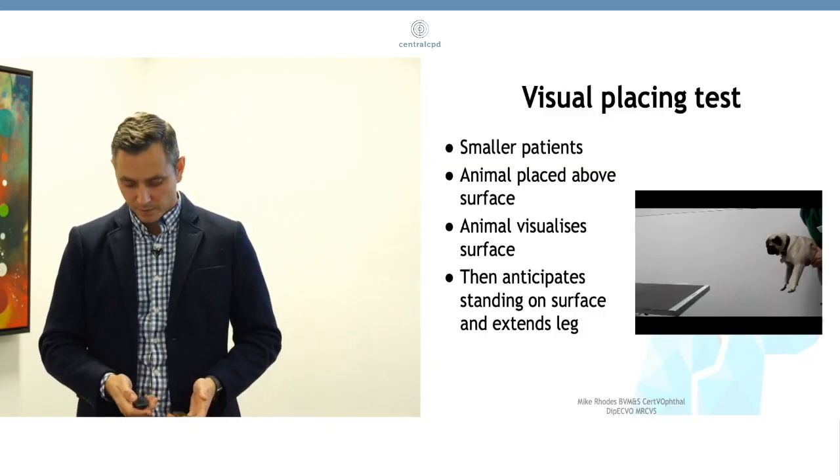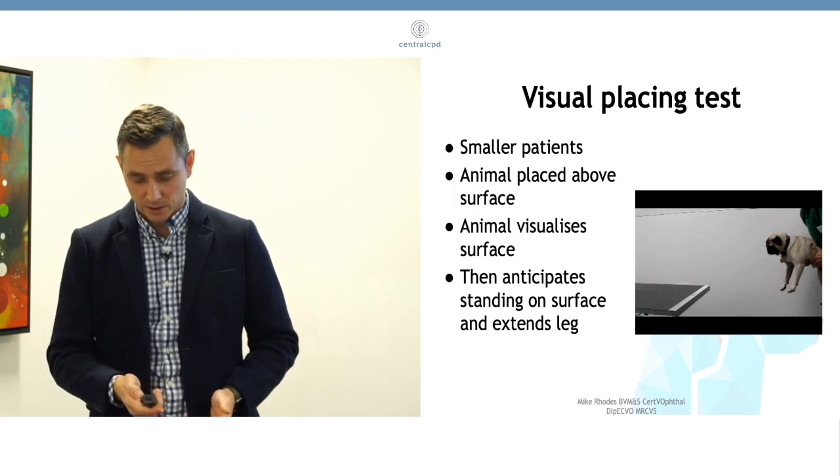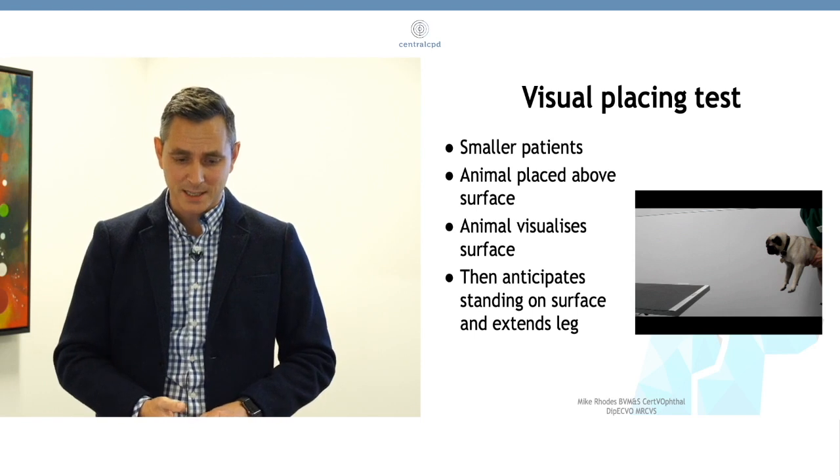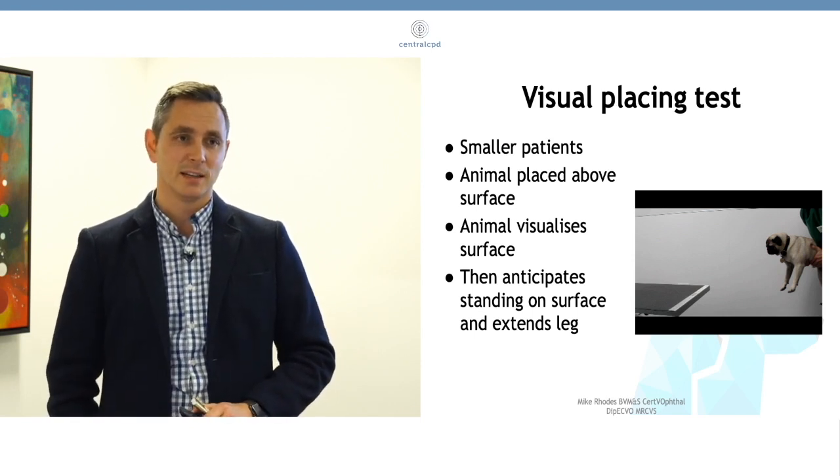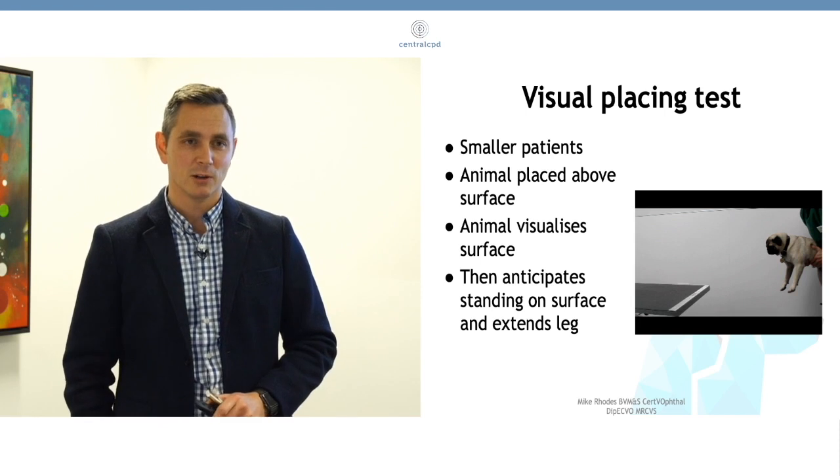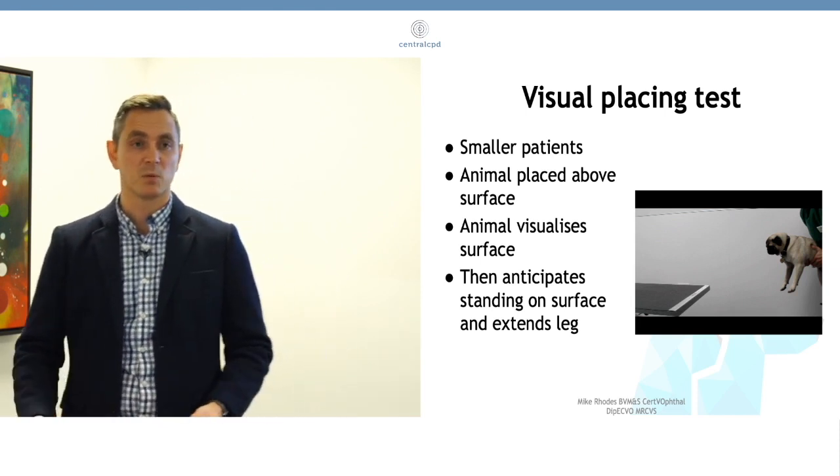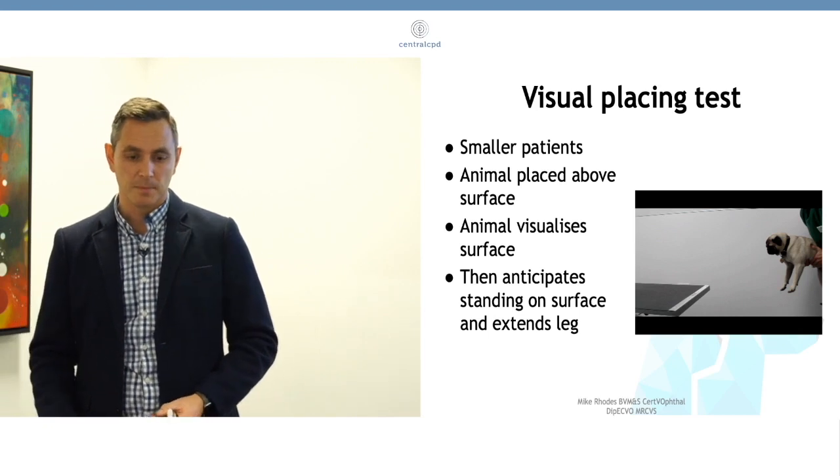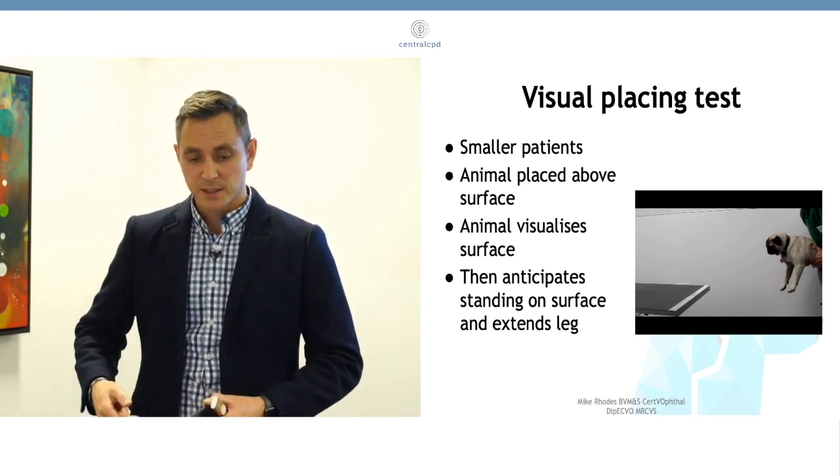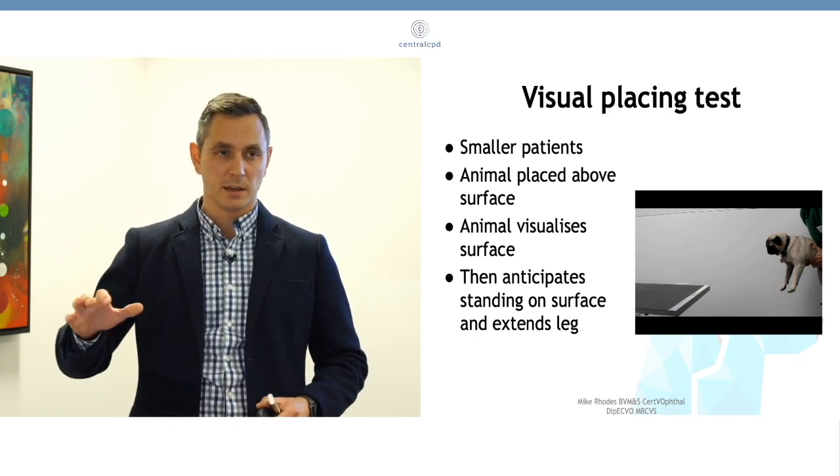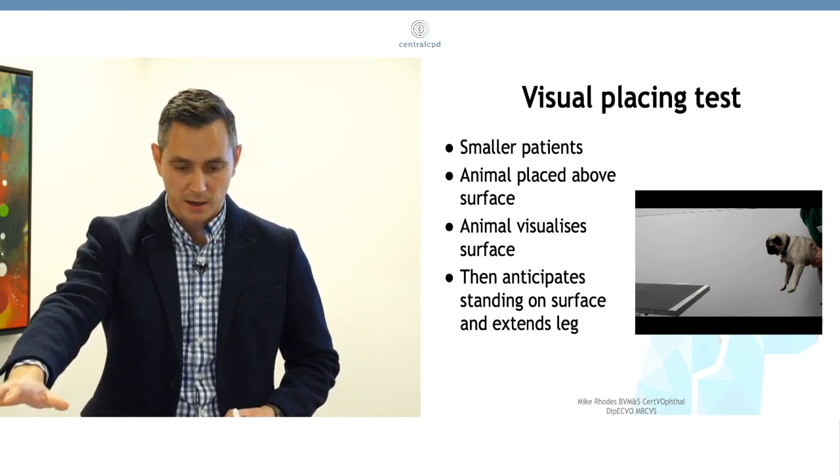Another visual test that we can do that doesn't involve doing the menace is called a visual placing test. You're not going to do this with a Great Dane unless you are Arnold Schwarzenegger, because you physically can't lift them to the table. But for smaller patients, it's quite good. You place them above the table. If the animal can see the table, they will anticipate being put down to the table. They'll put their leg out.